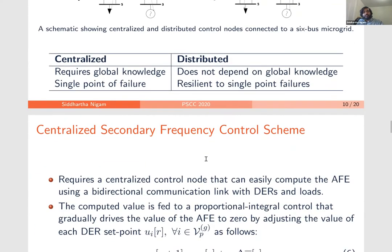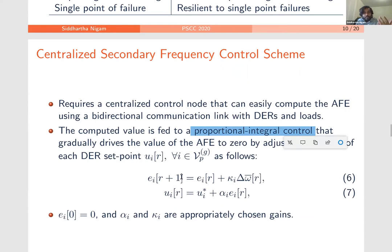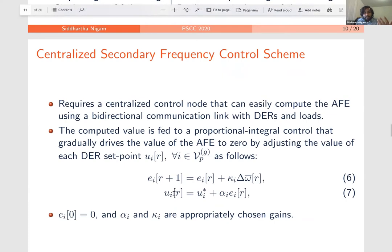In the centralized frequency control scheme, the centralized node polls for the set points, computes the frequency error, and passes it through a proportional-integral PI-based control. From equations six and seven — the details are in the paper — the individual set points of the DERs are updated. As perturbations keep happening, the hope is that the frequency error goes to zero as long as the gains are chosen appropriately.